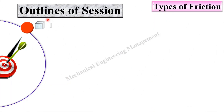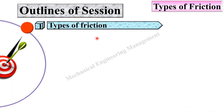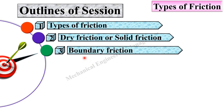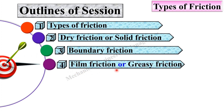Let us see first of all the outlines of the session. First we will discuss about the types of friction. Then we will see dry friction or solid friction, next boundary friction, and at last we will see film friction or greasy friction.